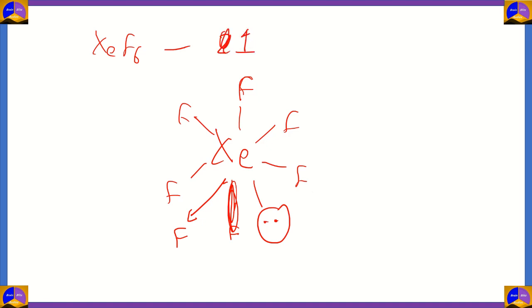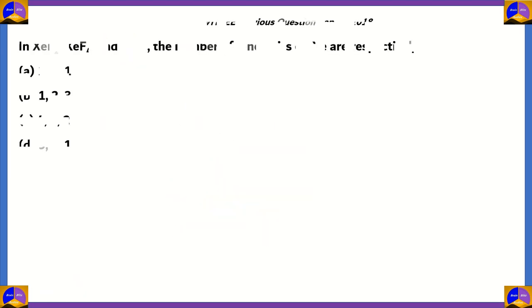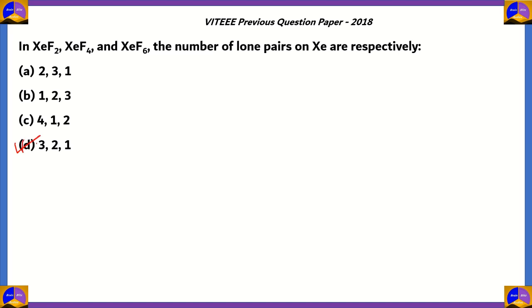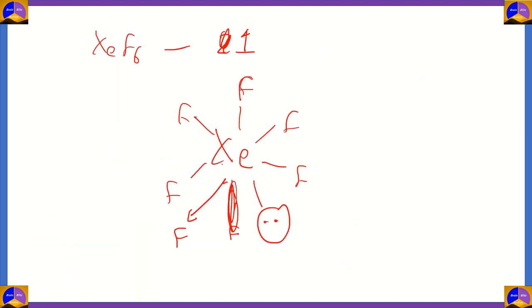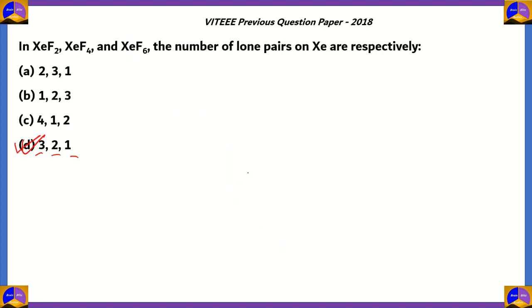We can draw that. Therefore, the correct option for this question is option D: 3, 2, 1 respectively. XeF₂ has three lone pairs as we've drawn out. For XeF₄, you have two lone pairs. And for XeF₆, you have just one lone pair. Therefore, option D is the correct option for this question which was asked in 2018.